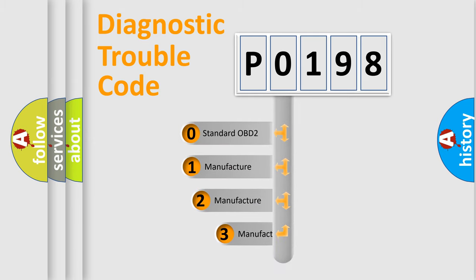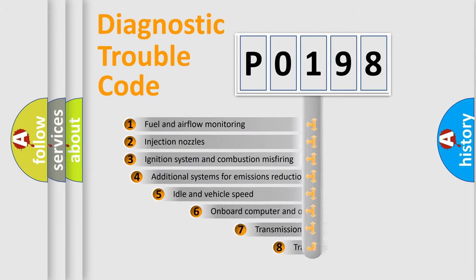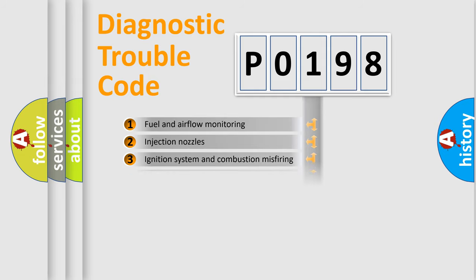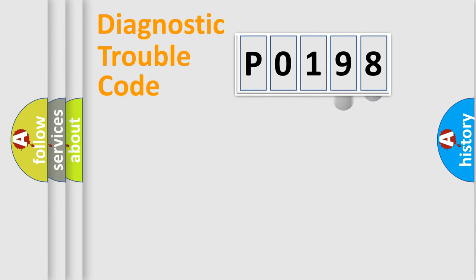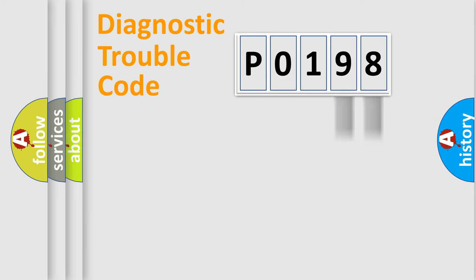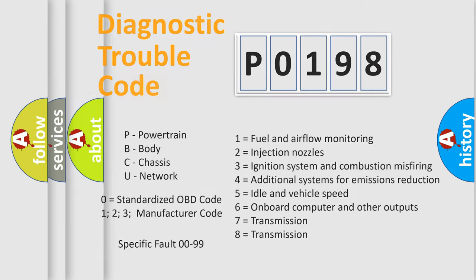If the second character is expressed as 0, it is a standardized error. In the case of numbers 1, 2, or 3, it is a more manufacturer-specific expression of a car-specific error. The third character specifies a subset of errors. This division is valid only for the standardized DTC code, where only the last two characters define the specific fault of the group.